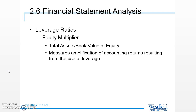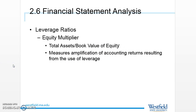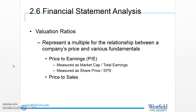The last leverage ratio is the equity multiplier: total assets divided by the book value of equity. It tells us how many times larger the firm is relative to the amount of equity investors originally put in — for example, if assets are three times the book value of equity. This tells us something about the degree of leverage, and as we saw earlier, leverage can amplify returns, which can be good or bad.